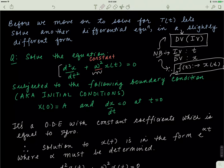We have our parent equation and we're told the initial conditions — initial conditions is just a fancy name for boundary conditions. When t equals 0, the value of x is just a, and then the rate of change of x with respect to t is 0 when time is 0. That means when you just start your stopwatch, the rate of change of x is 0.